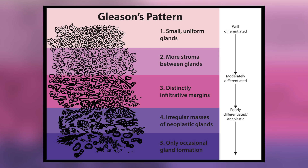The more erratic and the more bizarre the cells are, typically the more aggressive they are and the higher the grade associated with them. Grade 3 represents a more normal type of prostate cancer, 4 being slightly more aggressive, and 5 being very aggressive.